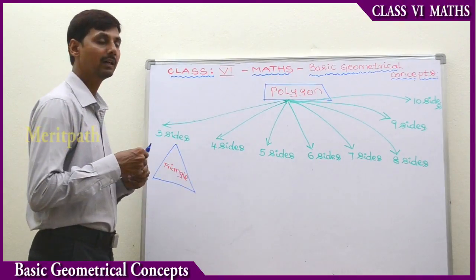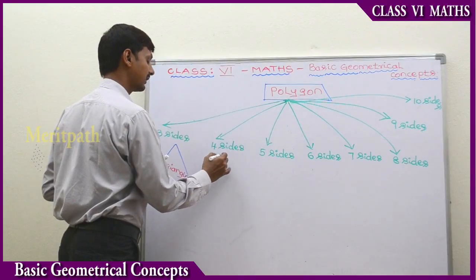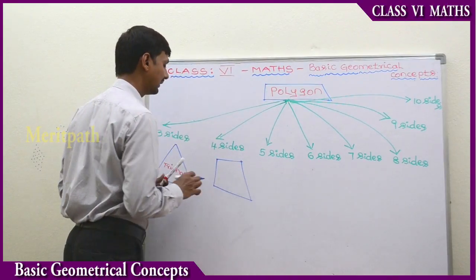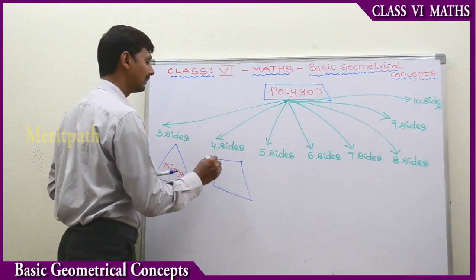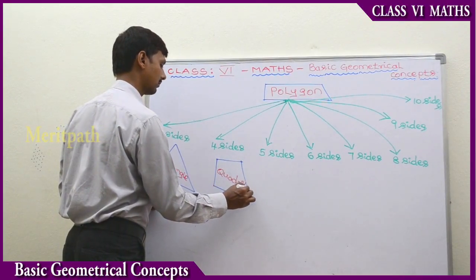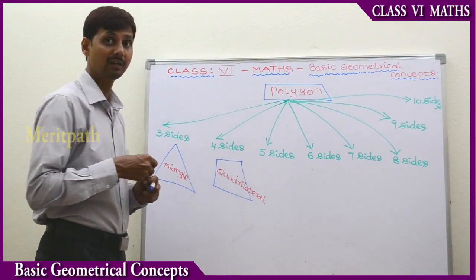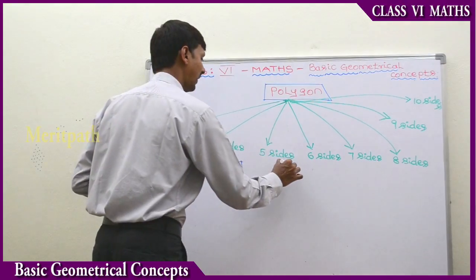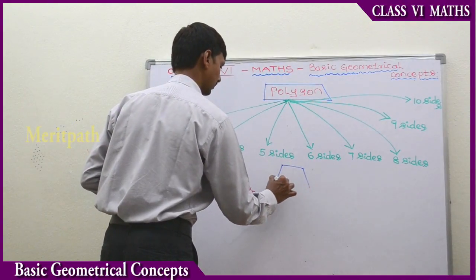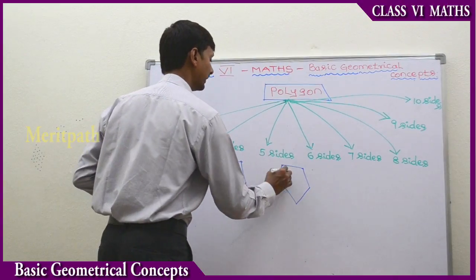A four-sided figure — a polygon which has four sides — we call it a quadrilateral. And a simple closed figure which is bounded by five sides we call a pentagon.